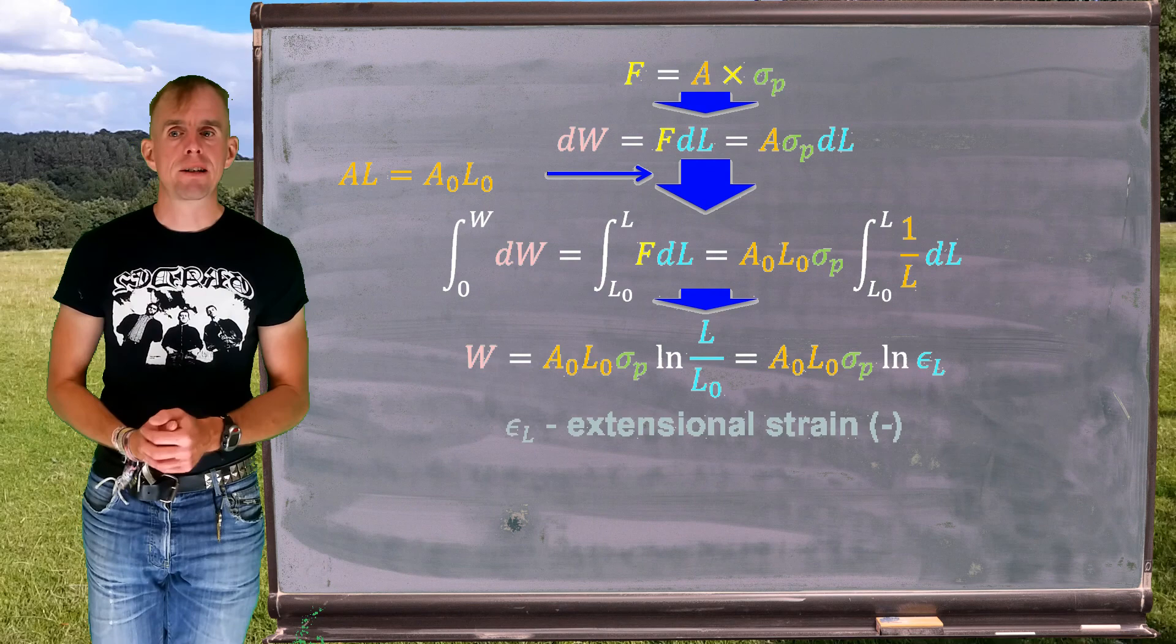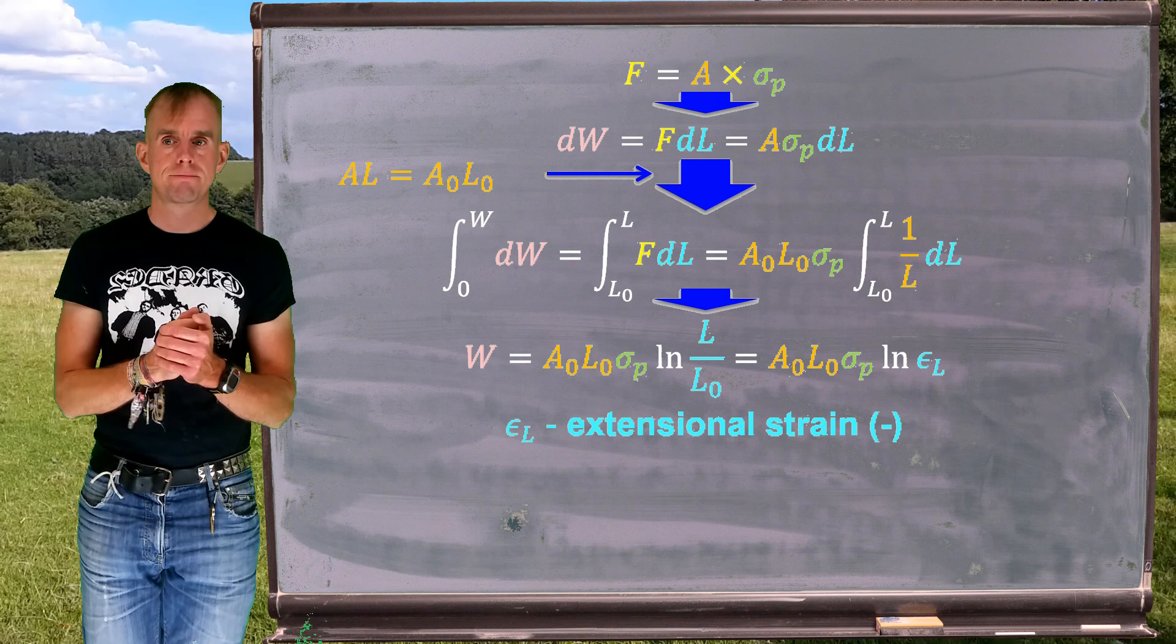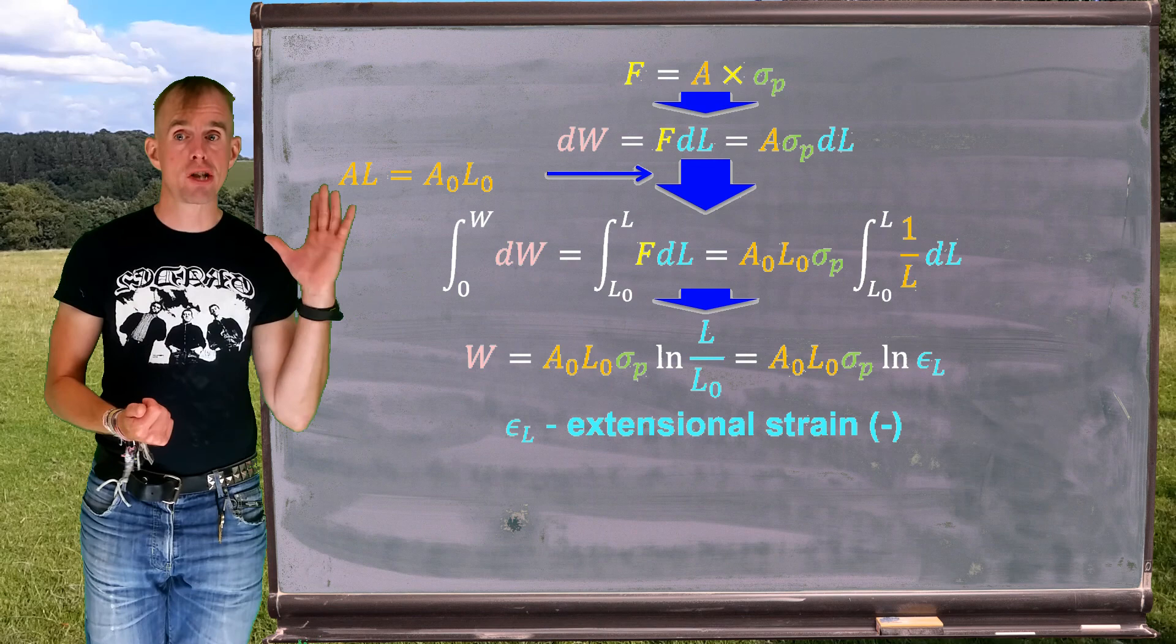And we're going to call L over L0 the extensional strain and we're going to denote that by the symbol epsilon subscript L. So there is an expression for my work.